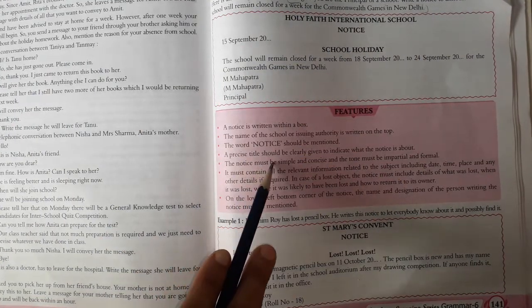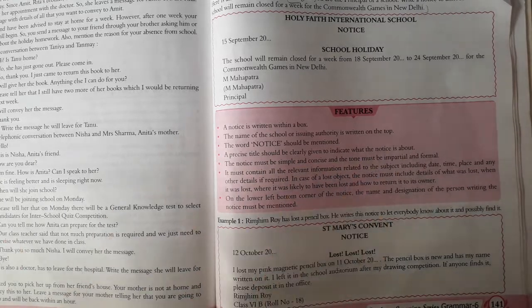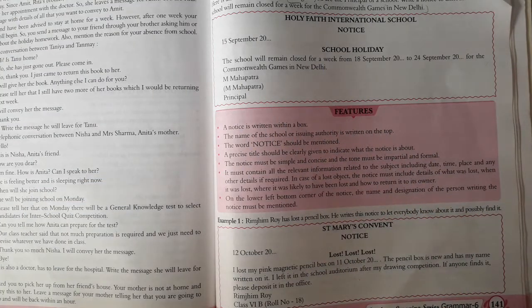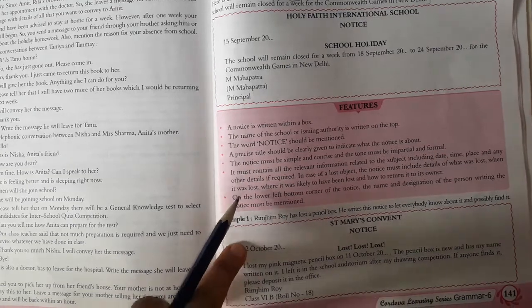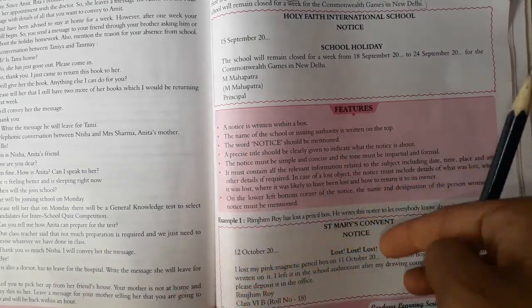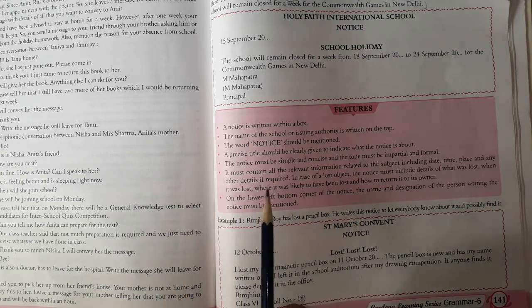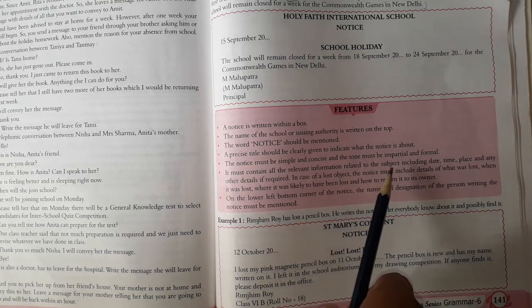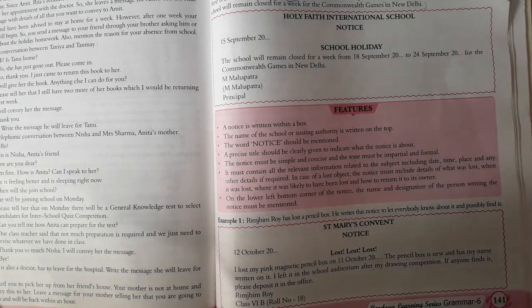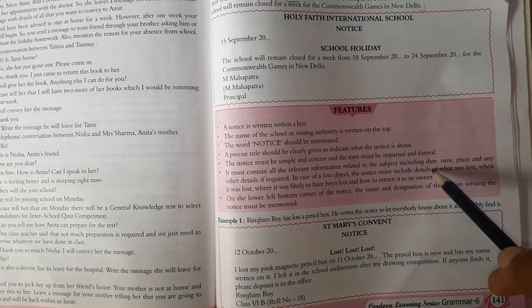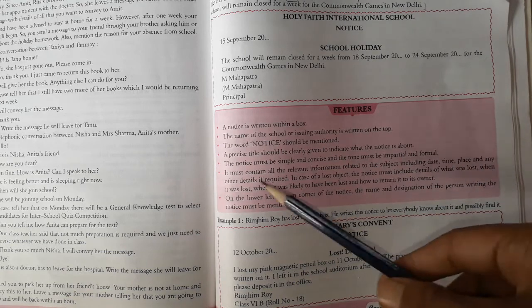Then a precise title should be clearly given to indicate what the notice is about — written in two to three lines. You have to mention what your notice is about clearly. The notice must be concise and the tone must be impartial and formal. It must contain all the relevant information related to the subject, including date, time, place, and any other details.